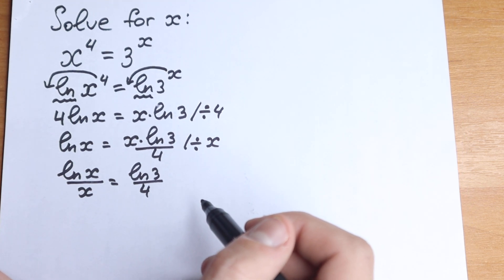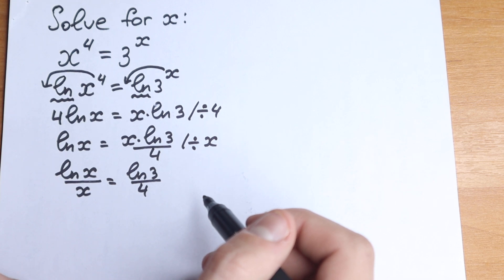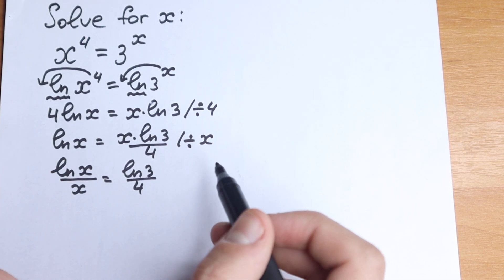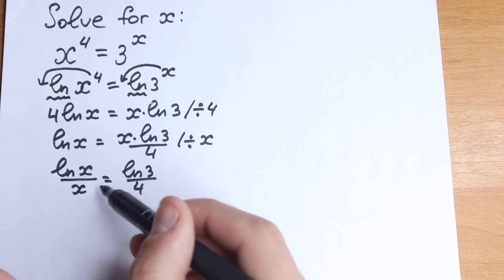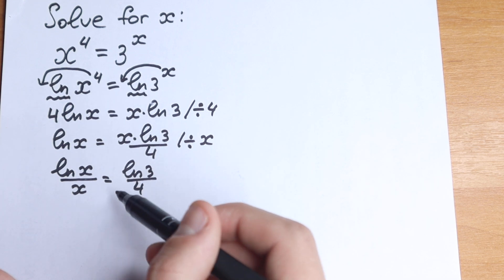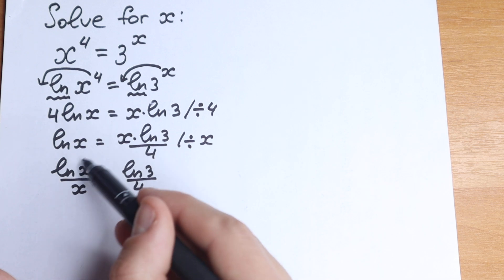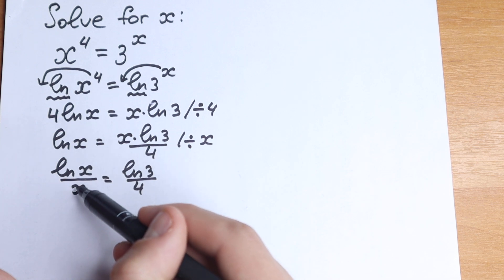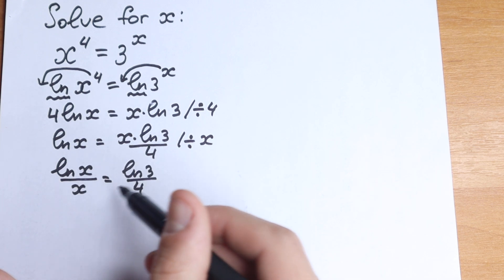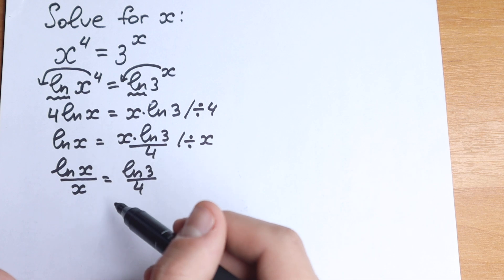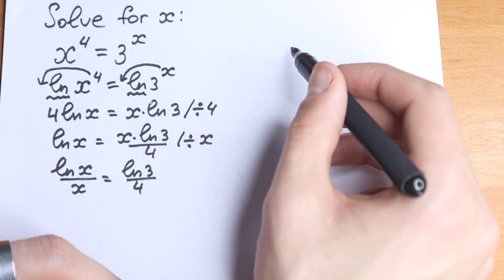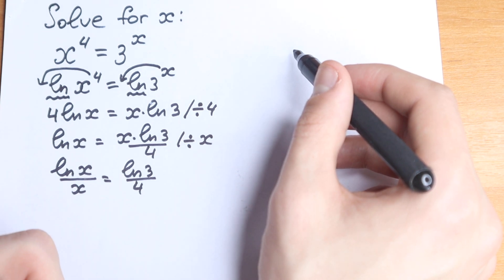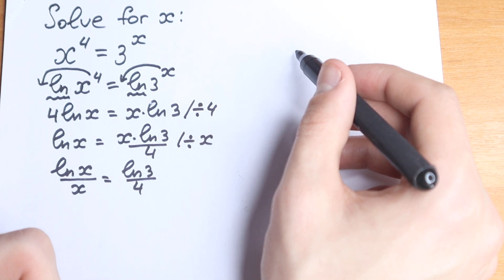That was our first step. For the second step, we need to know about the Lambert W function, because it's really hard to isolate x by cross-multiplying — that's absolutely impossible since we have x inside the natural log and x in the denominator. So let's learn or remember about the Lambert W function. I know a lot of students have difficulties with it, so I want to explain it in simple words.